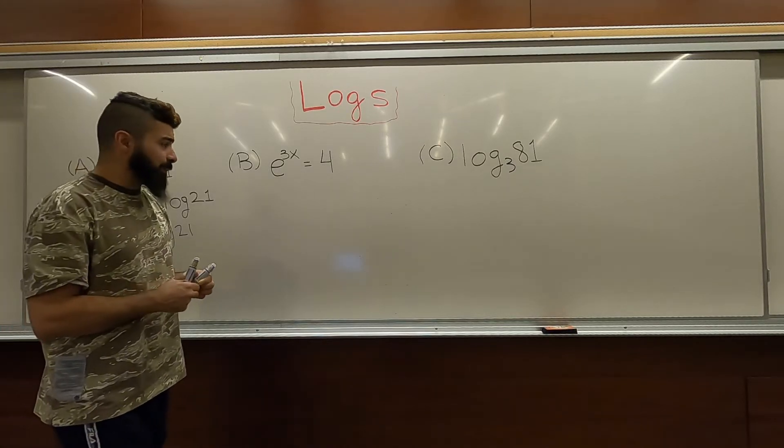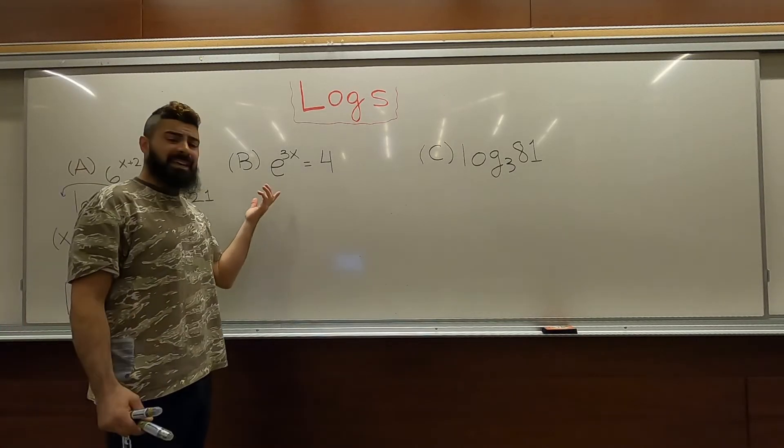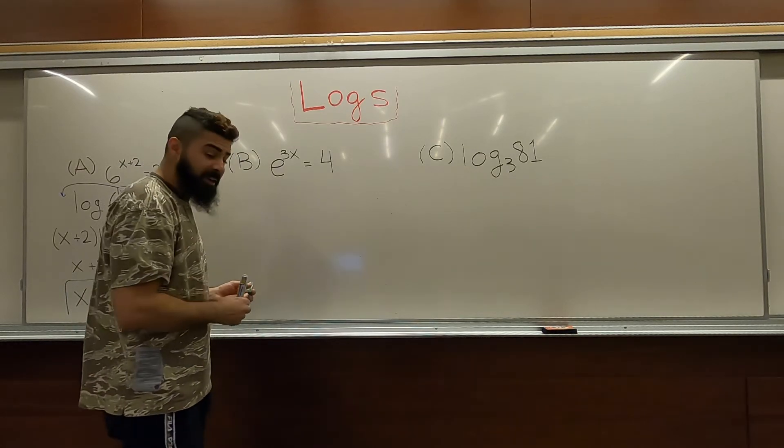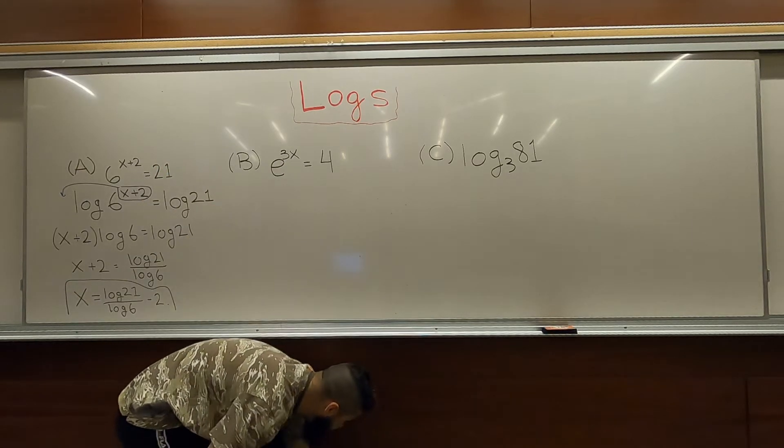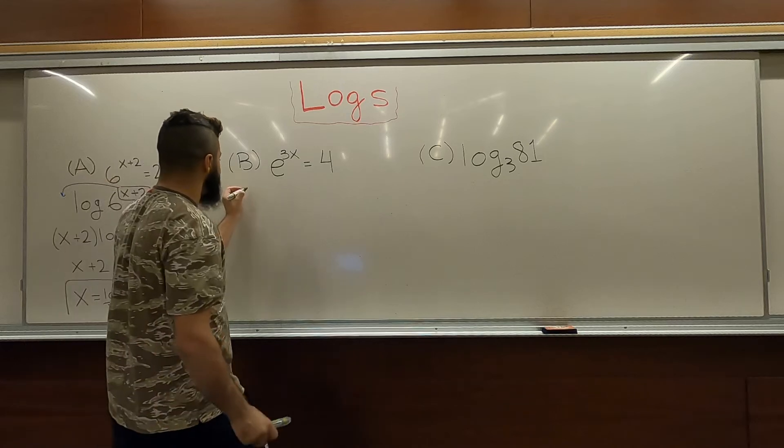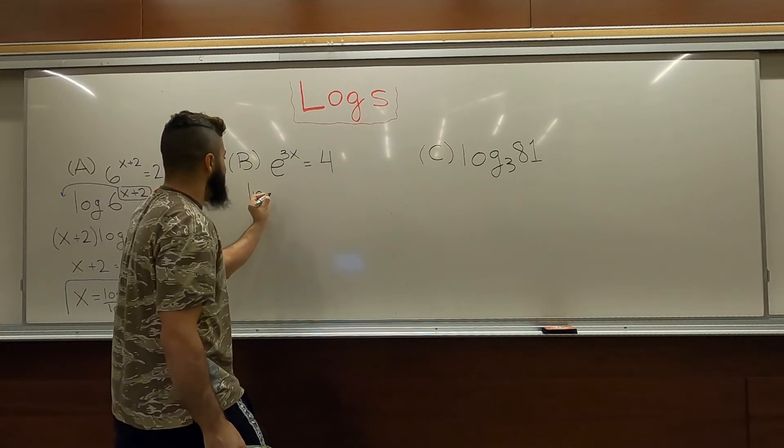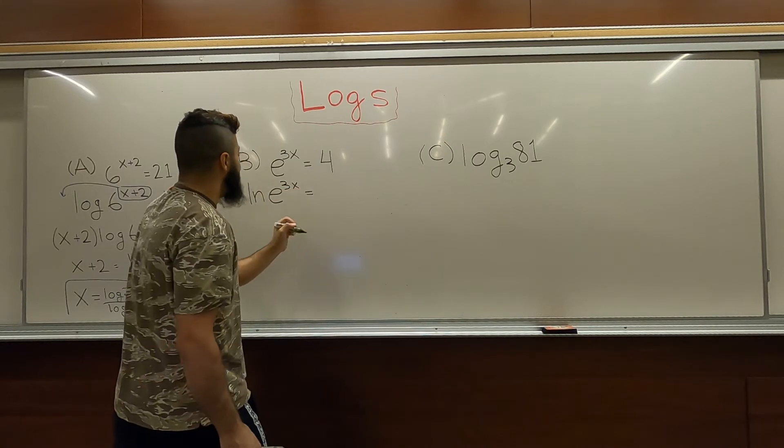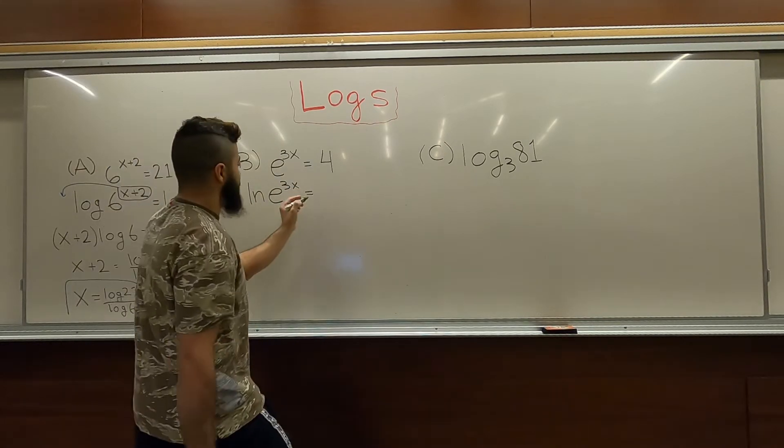Let's take a look at b. Anytime you have an e raised to a power, the trick here is to take a natural log. That's the same as log base e. So, we're going to take a natural log of both sides. That's represented by ln. So, we're doing log base e of both sides instead of log base 10 over there.